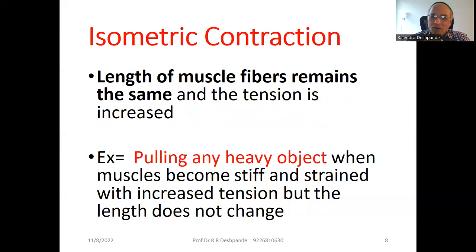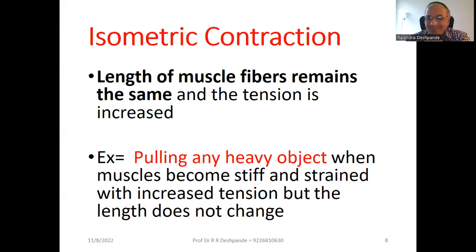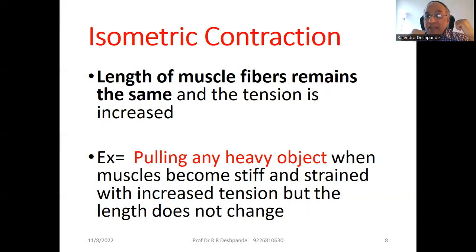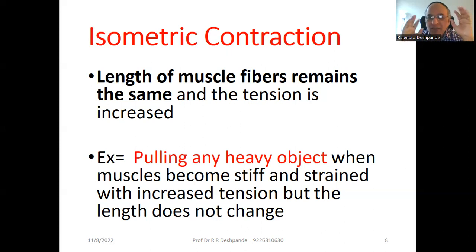Isometric contraction: iso means the same, metric means length. The length of the muscle fiber remains the same and tension is increased. An example is weightlifting or pulling any heavy object — when muscles become stiff and strained with increased tension, but the length does not change. Weightlifting is the example of isometric contraction.